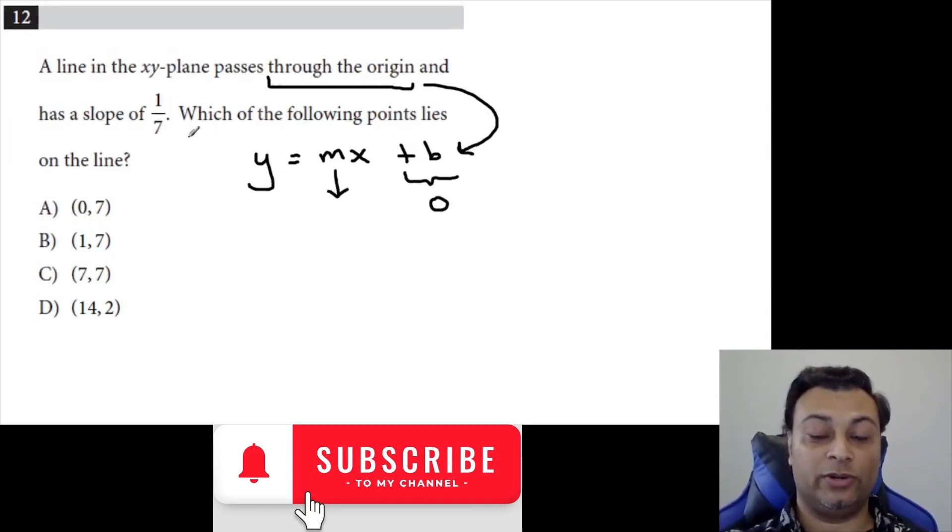And the slope, well, we're given that, is 1/7. So our equation is y equals 1/7 x. That means if the y-coordinate is 1/7 the size of the x-coordinate, that's the answer.